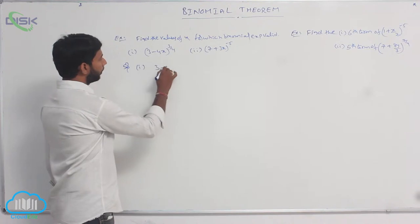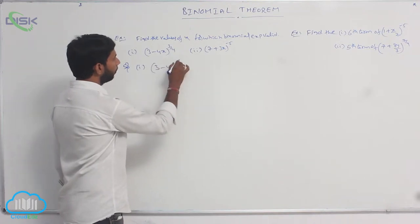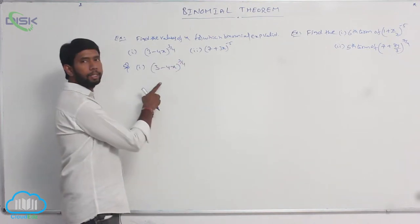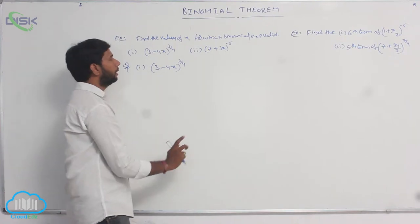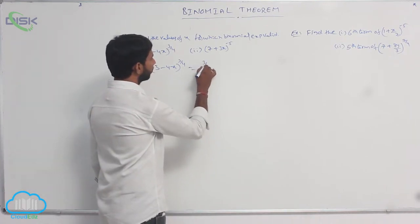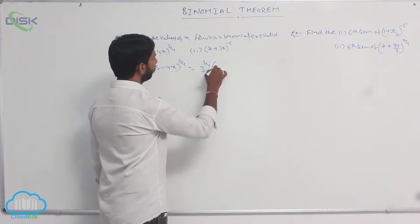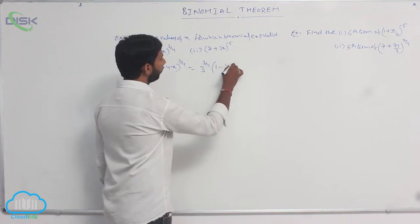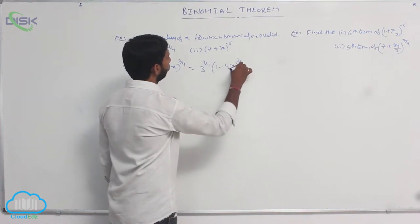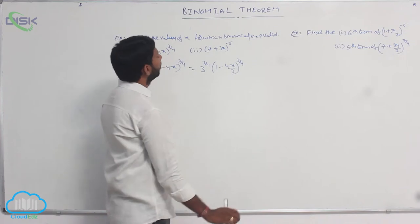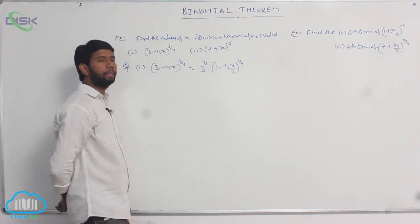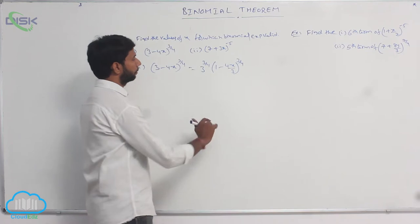The first given expansion is (3 − 4x)^(3/4). Any binomial expansion must be of the form (1 ± x). Here, 3 is taken as common, giving 3^(3/4) into (1 − 4x/3)^(3/4).